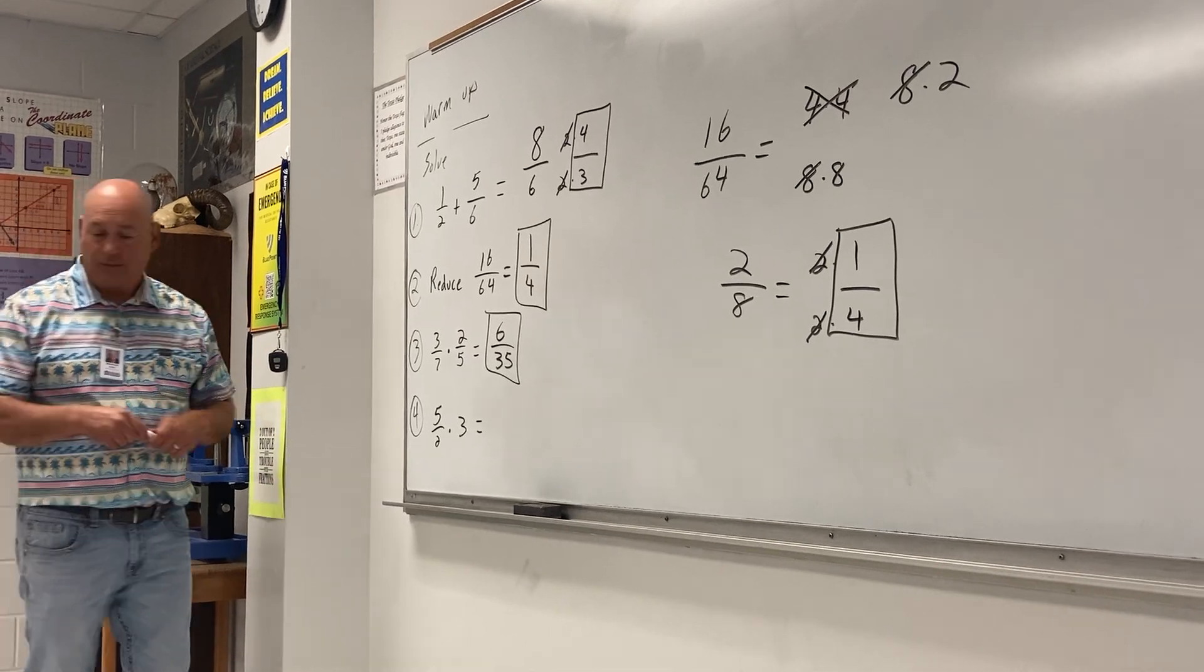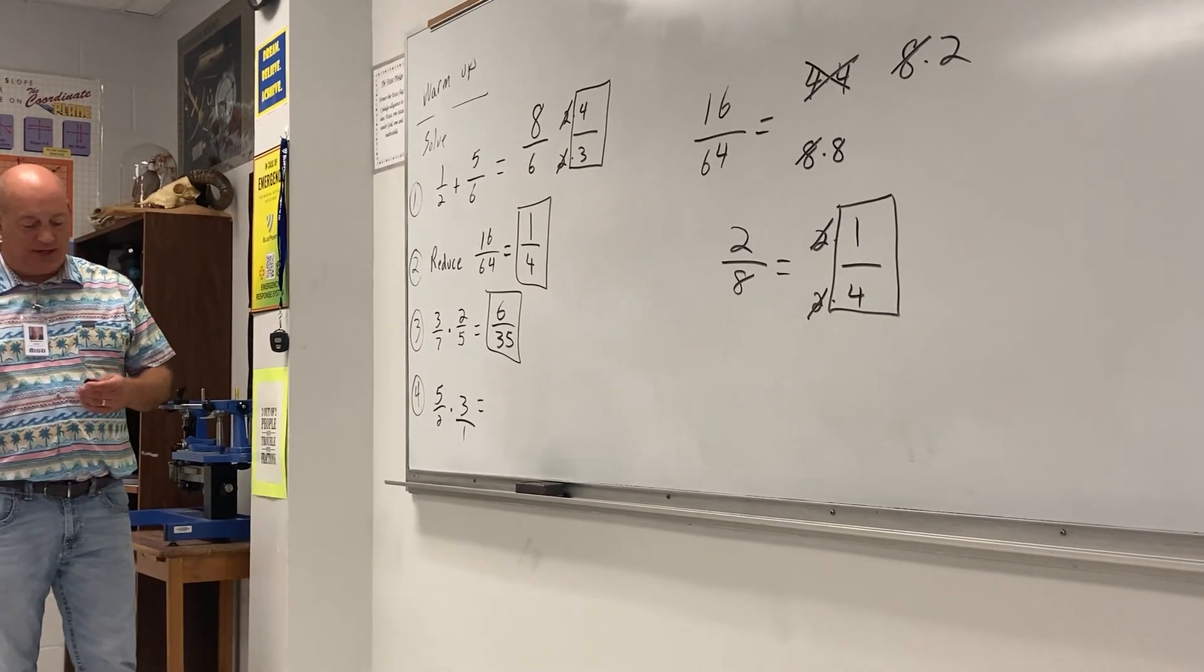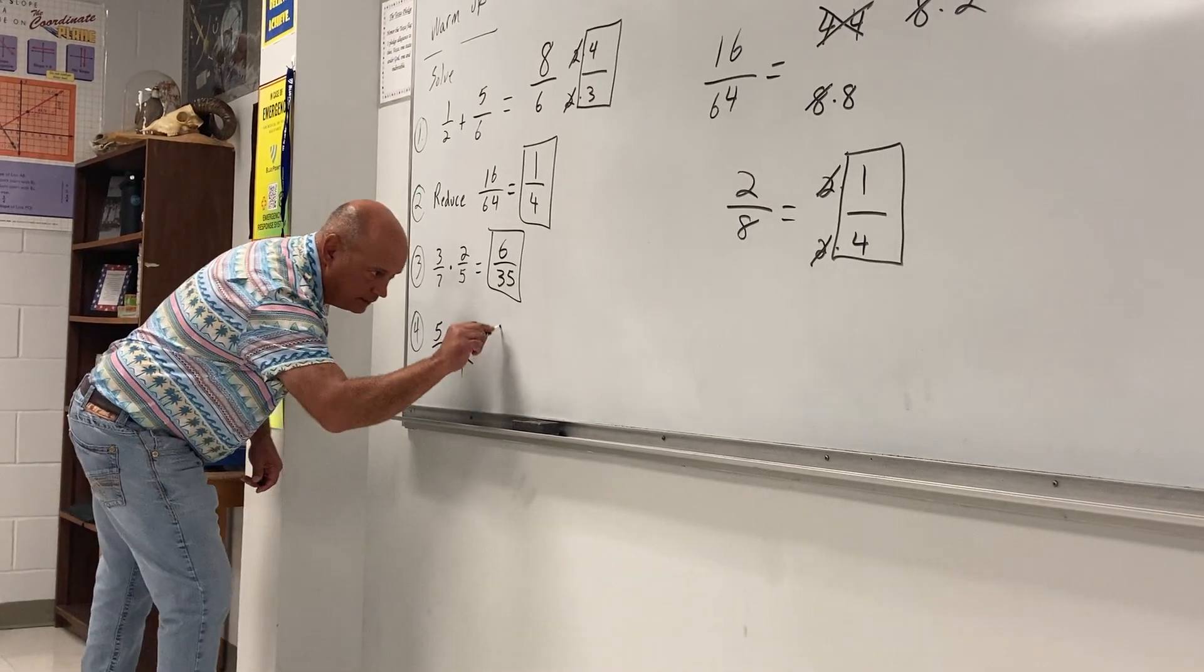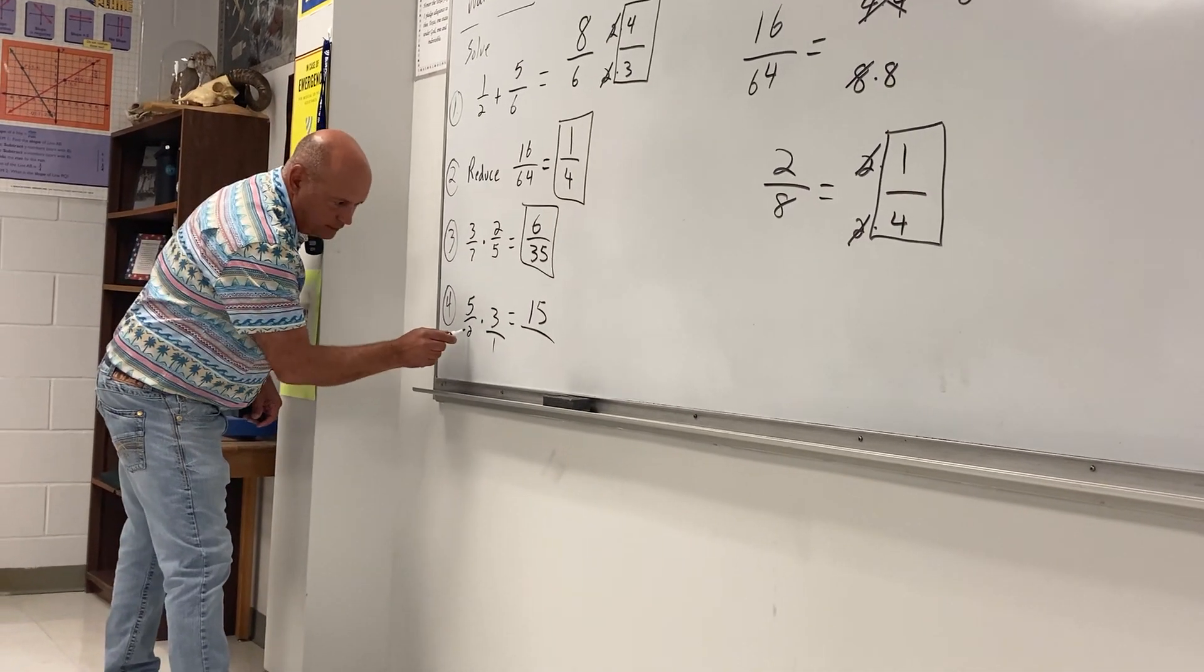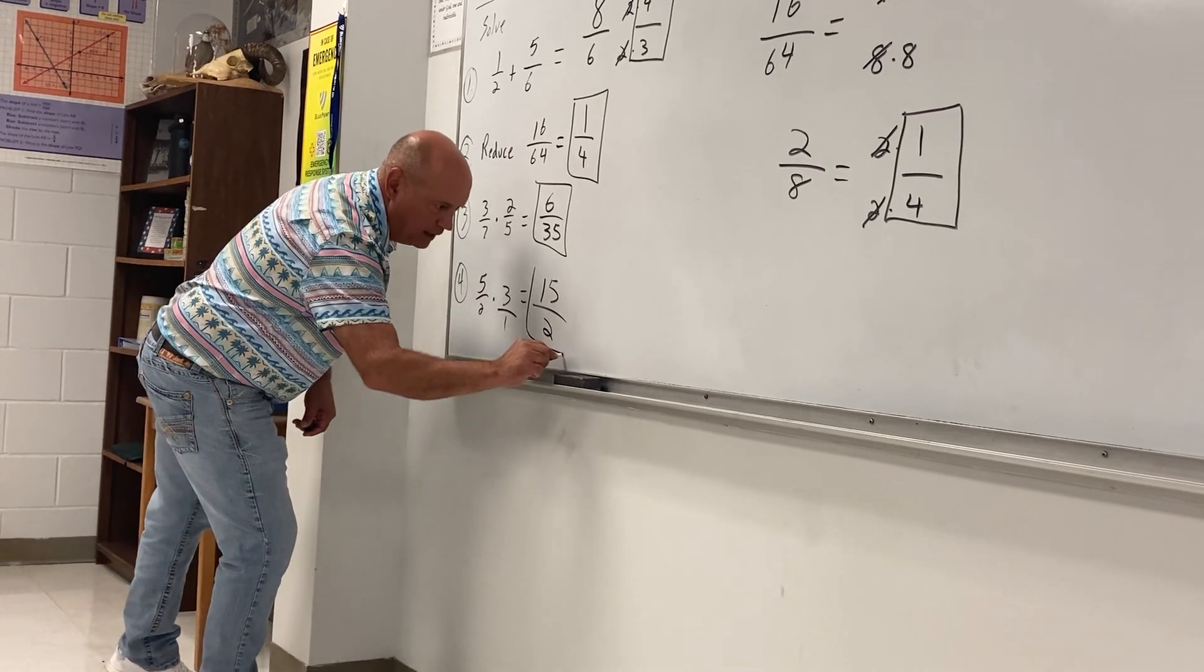Yes. All right. Now Shelby, tell me where to go. Seven times five times three. Fifteen. Over. Seven times two times one. Which is two? Yes. All right. Guess what?